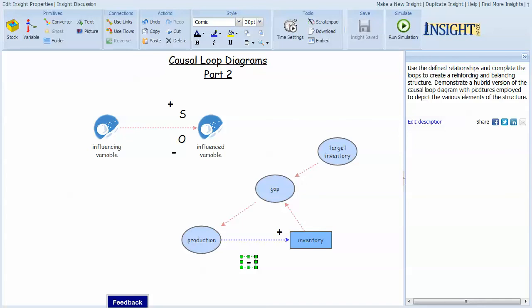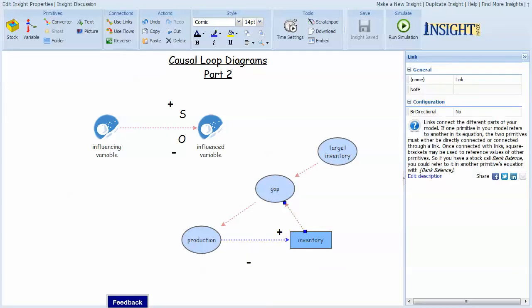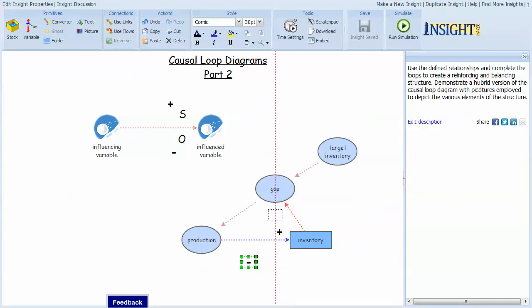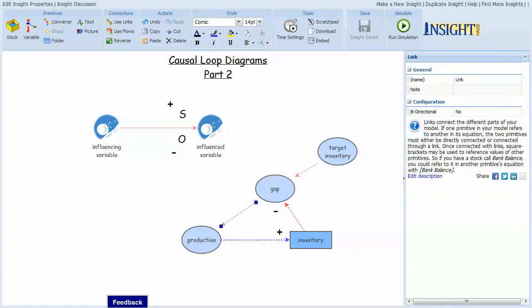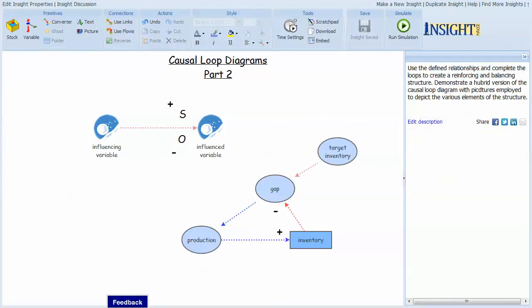So as production adds to inventory, inventory as it increases would decrease the gap. Let me make this red, just because that's the typical notation that I use. And as the gap gets larger, it would tend to increase production. So I'll put another plus sign over here. So I now have a loop where production adds to inventory, inventory reduces the gap, that's a balancing or negative relationship, and as the gap increases, it would tend to add production.